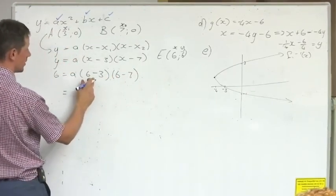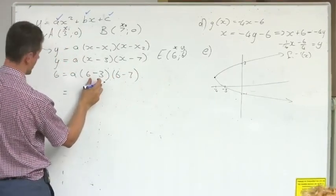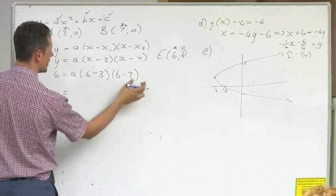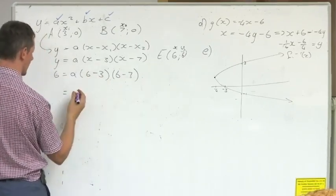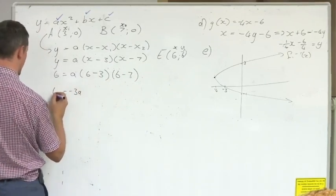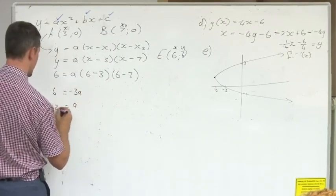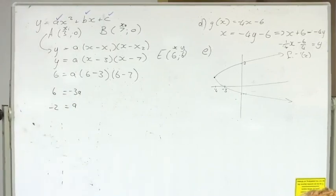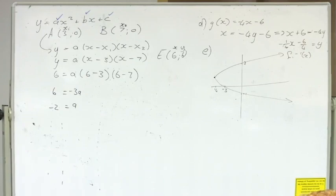This gives me (6 − 3) = 3 and (6 − 7) = negative 1, so this gives me negative 3a. Therefore a is negative 2. Does it make sense? Guys, is that a smiling or a sad parabola? It's a sad parabola, so it has to be a negative a. Please make sure your answer makes sense.